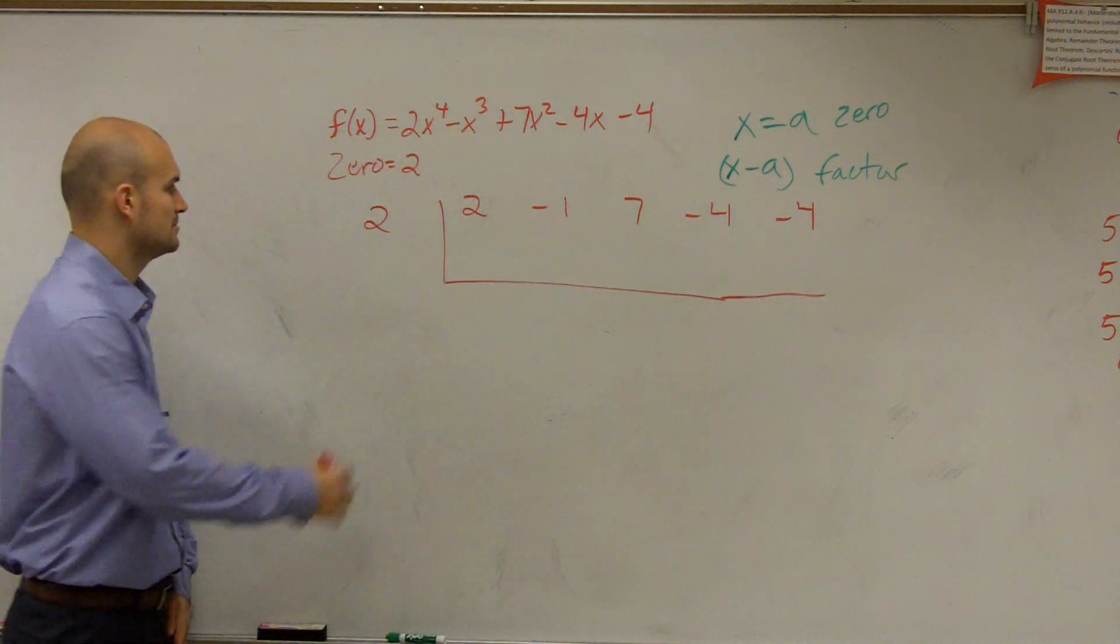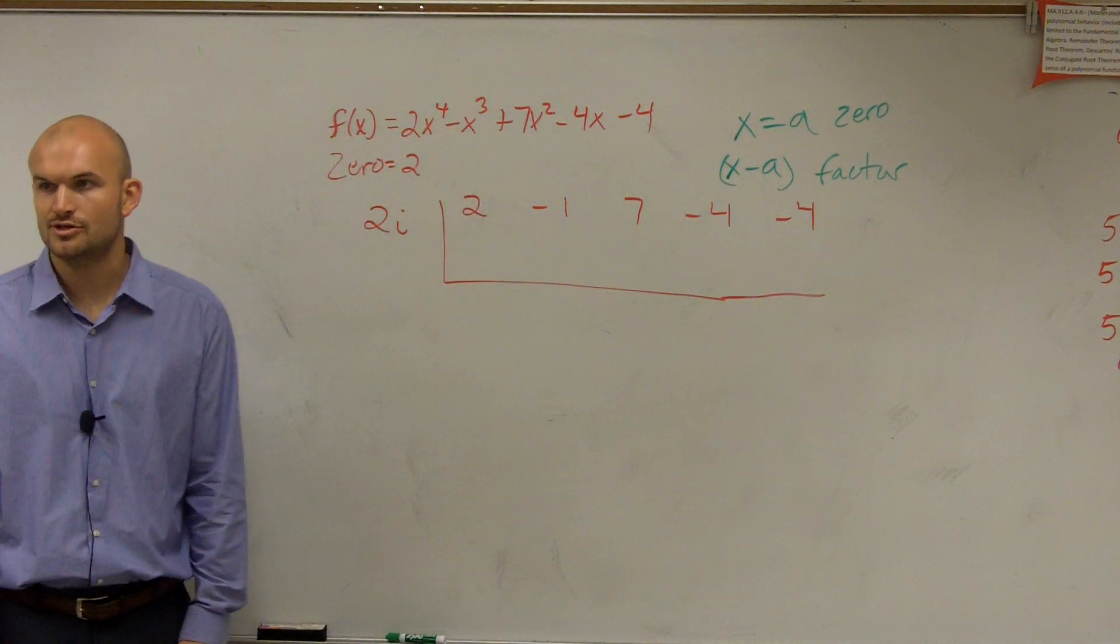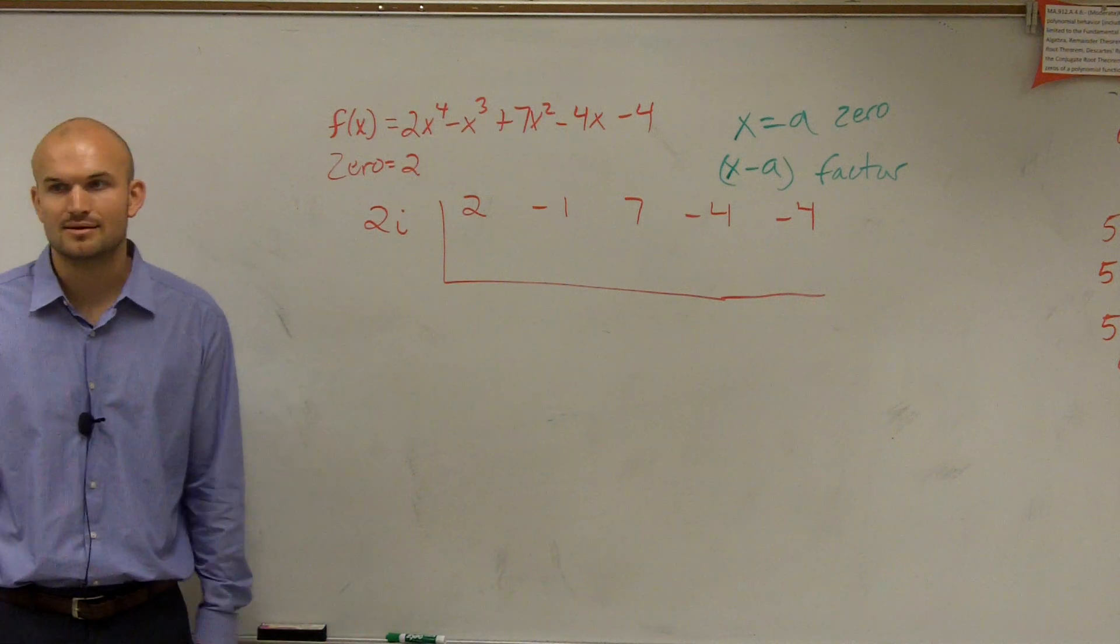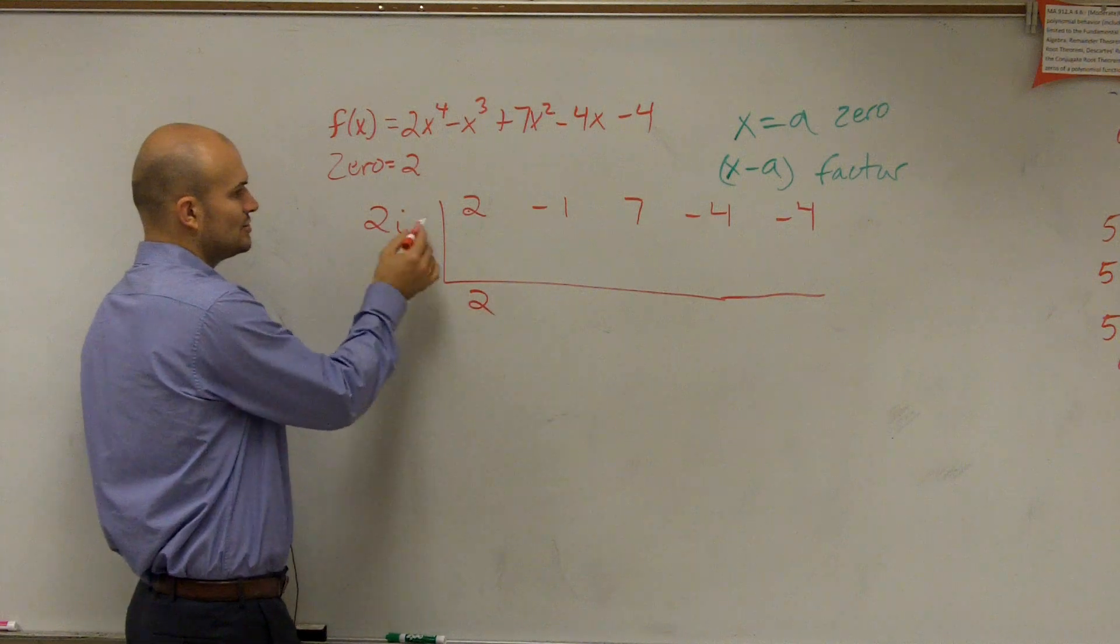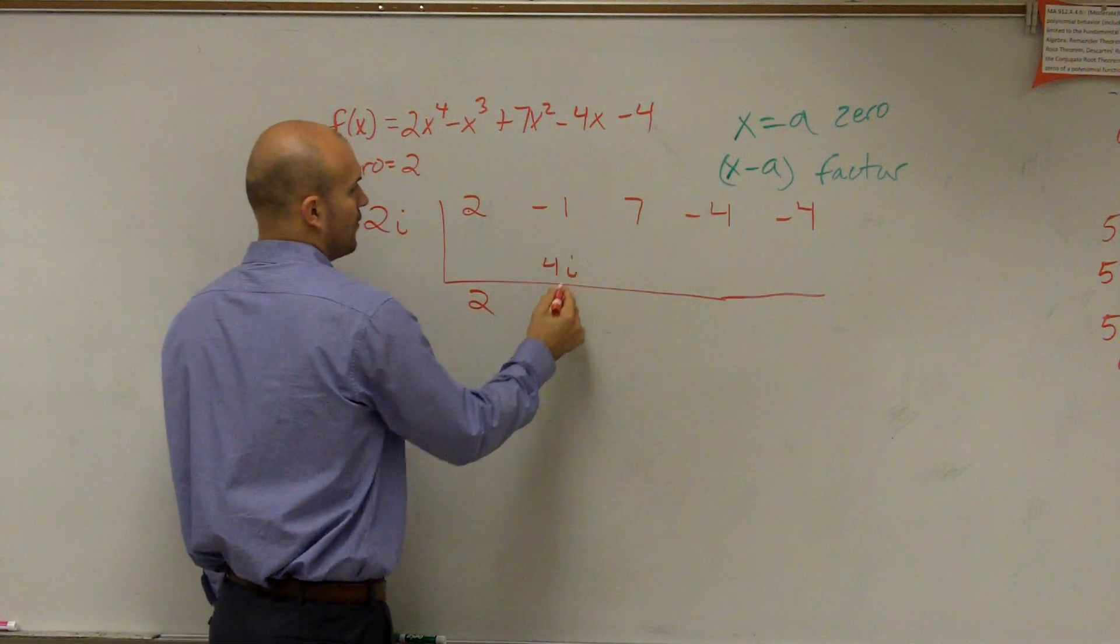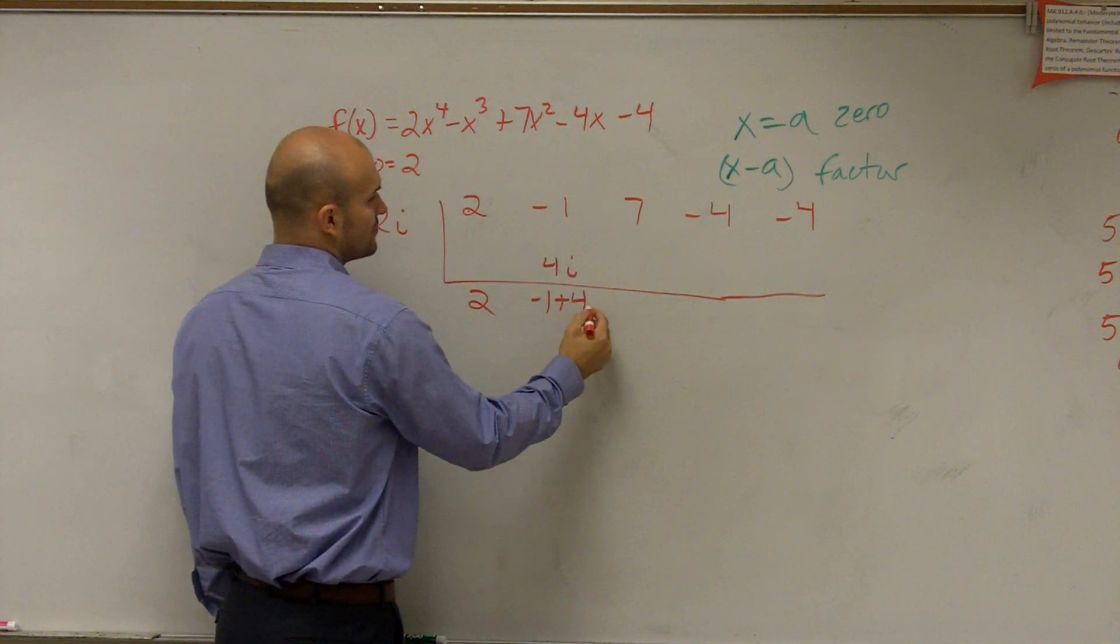Well, guess what? 2i is a zero, not 2. So we're going to do the same thing. So let's practice. 2 bring down is going to be 2. 2 times 2i is 4i, negative 1 plus 4i.